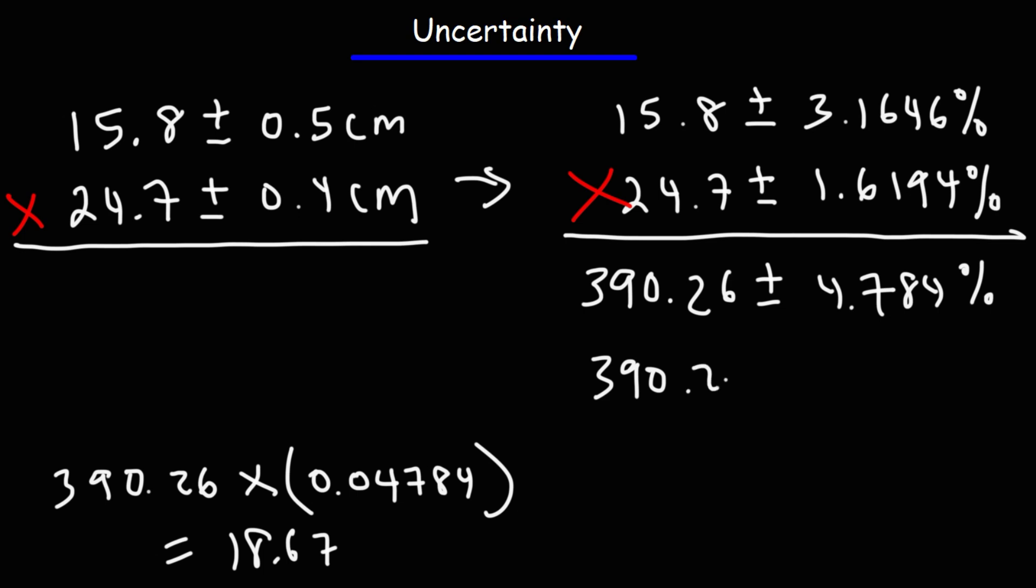So we have 390.26 plus 18.67 as our answer. But now, let's round it to the appropriate number of significant figures.